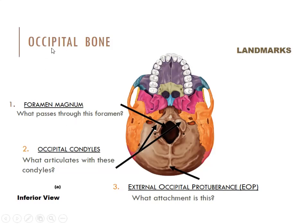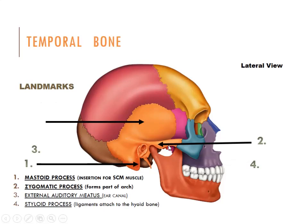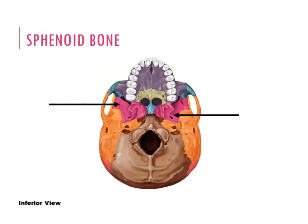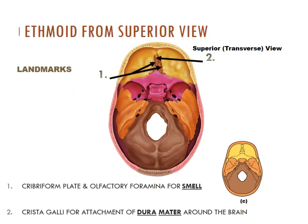What bone does the occipital condyle make a joint with? C1 — the atlas. There's the temporal bone with the mastoid and the zygomatic process — that bridge of bone across the side of your cheek. Then we have the palatine bone, nasal, and the sphenoid, giving us the optic canals where the optic nerves pass through. The sella turcica — those two landmarks belong to the sphenoid bone.